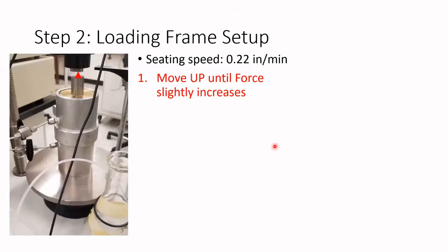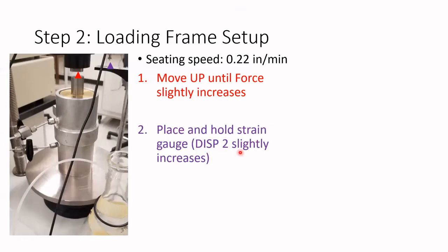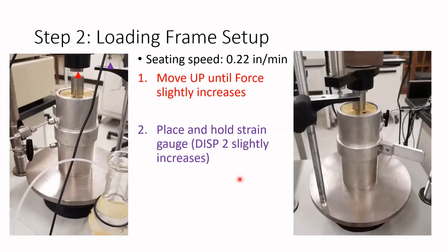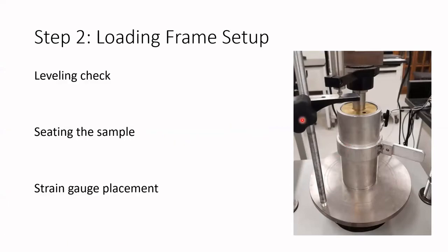Once at our desired confining pressure, the last step is to place and hold the strain gauge. We confirm this is done correctly when displacement slightly increases. The setup should show the vessel touching the upper part of the loading frame with the strain gauge placed and fixed at the top. We do a final double check: leveling done, sample measured, vessel prepared, and strain gauge placed — we are ready to measure.